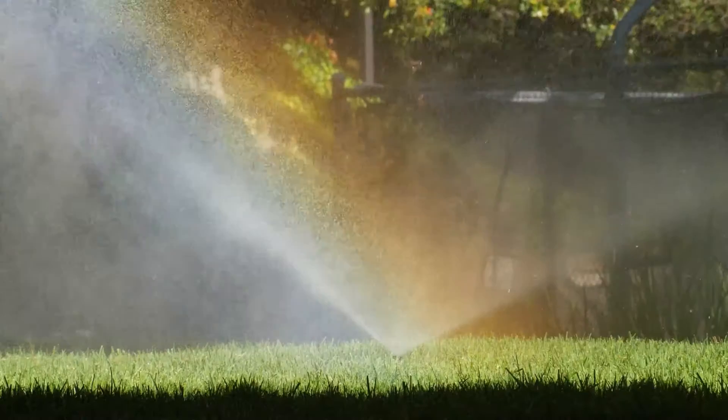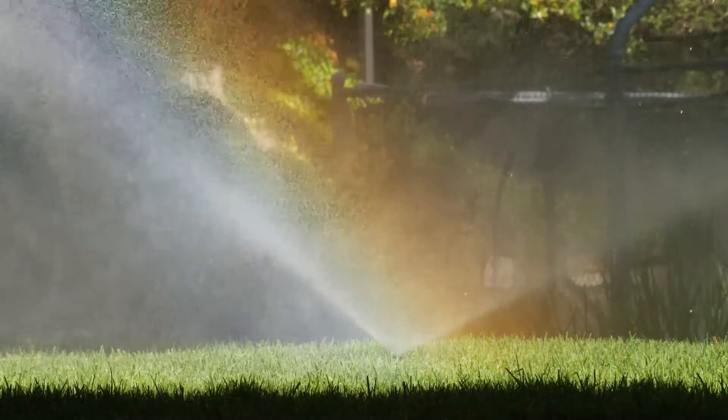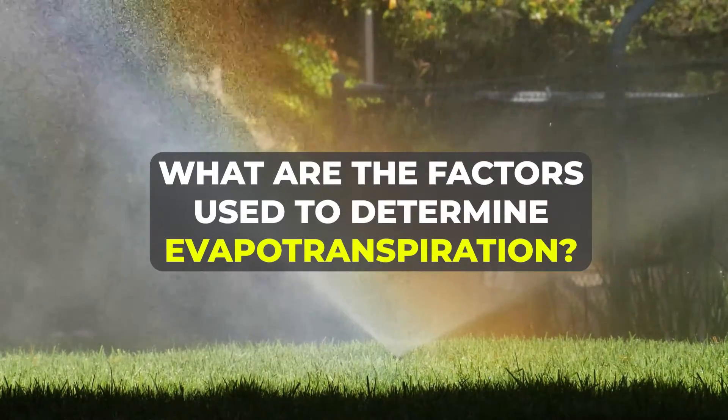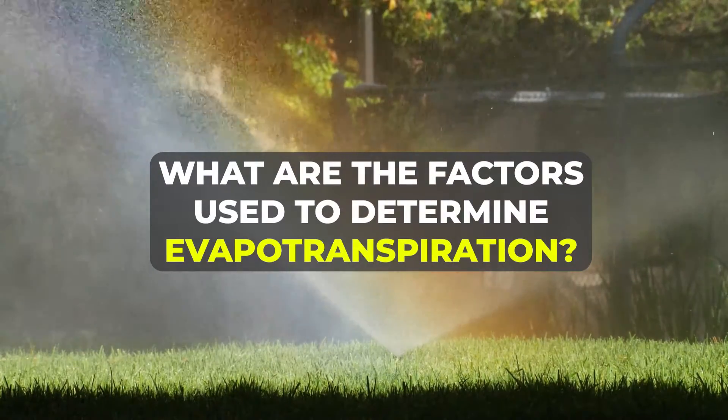We're not going into the weeds of distribution uniformity, sprinkler spacing, and all those other things to determine the actual amount of water you need to apply. I'm just framing this around what evapotranspiration is: it is the water loss from the plant and the soil. One of the common questions we receive is: what are the factors used to determine evapotranspiration? There are four of them.